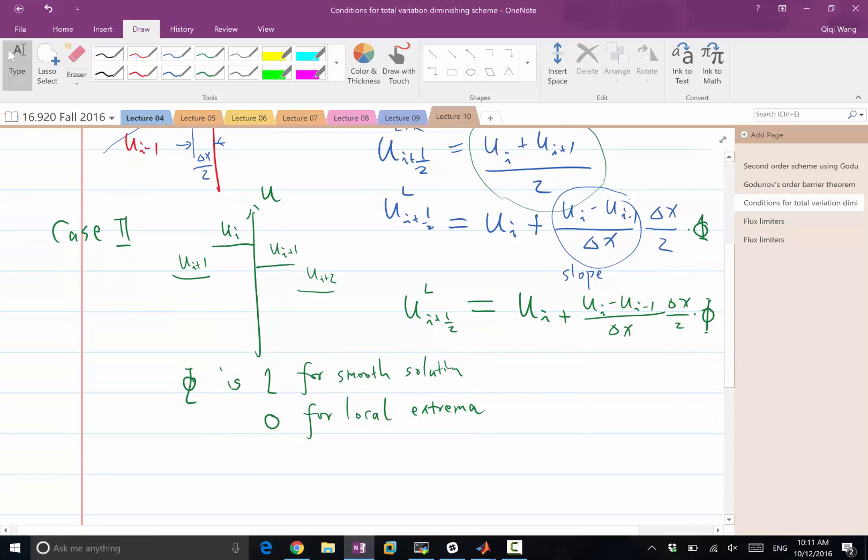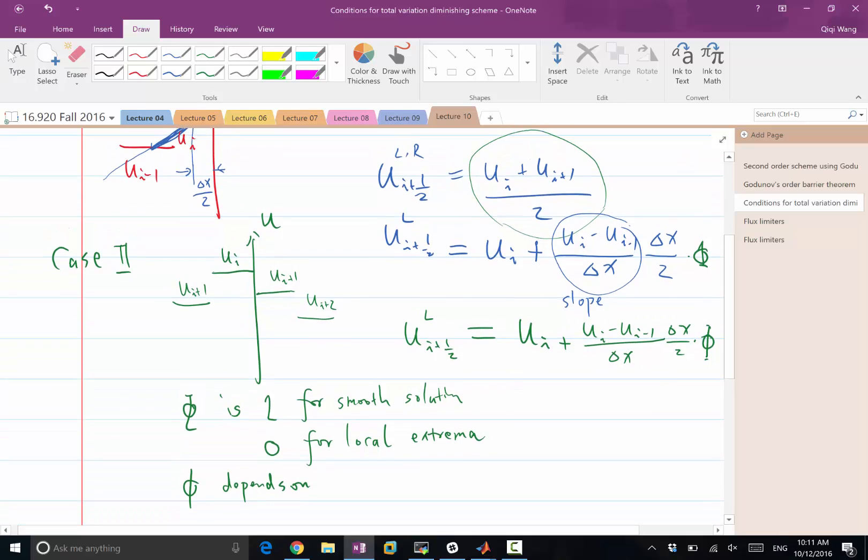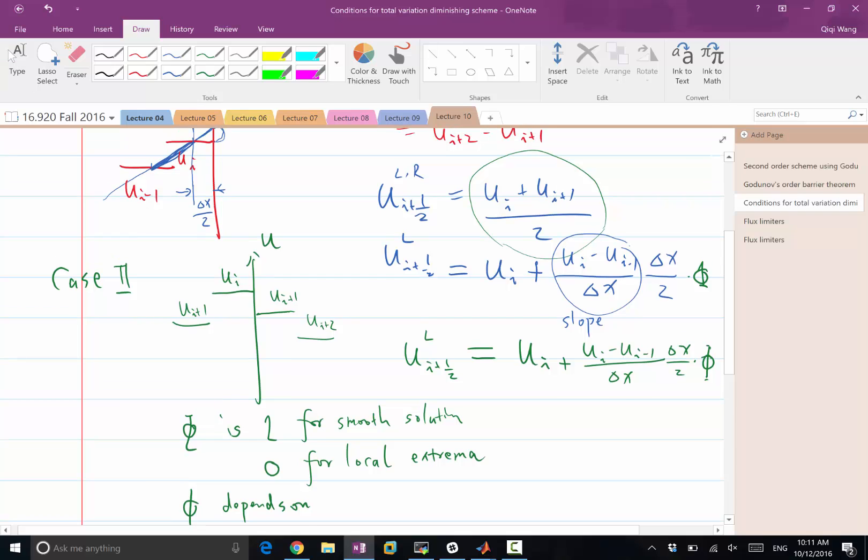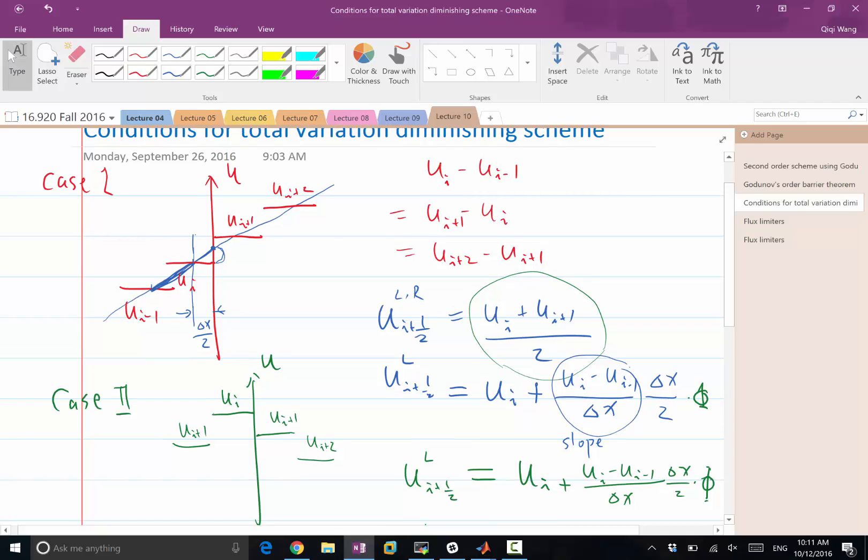So how do we construct this phi? So phi is going to be a sensor of whether the solution is locally smooth or not. So phi depends on... depends on what? The best way to sense whether this is a local extrema or locally smooth is the ratio between this and this. If the ratio... In this case, the ratio is equal to 1. When the ratio is equal to 1, we know it's locally a very linear function.